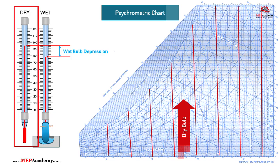Dry bulb temperature is the temperature of the air measured by a regular thermometer without considering moisture. It's measured using a standard thermometer exposed to the air but shielded from direct solar radiation. Dry bulb temperature is what people commonly refer to as air temperature, and it indicates the heat level of the air, making it crucial for thermal comfort and HVAC system design.